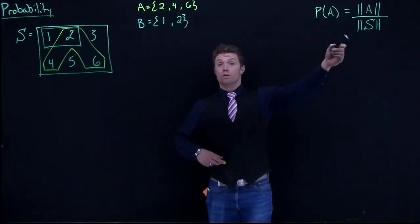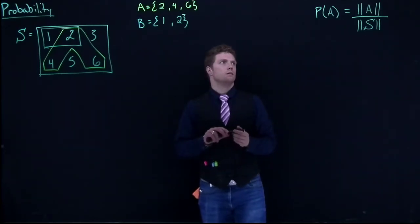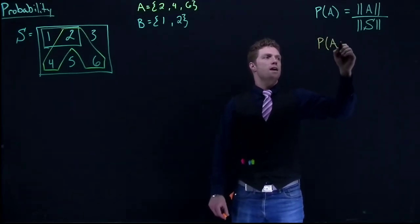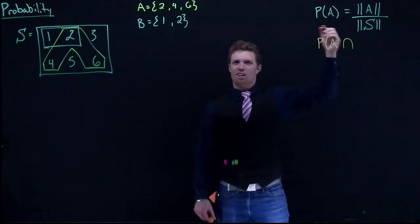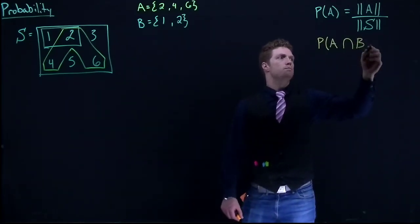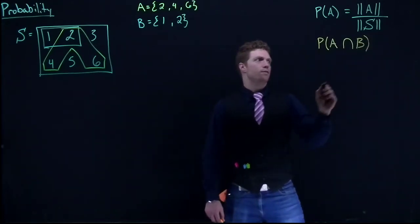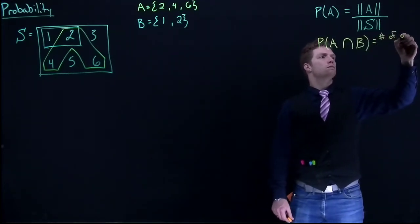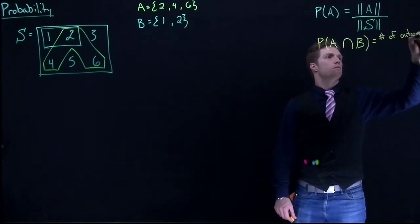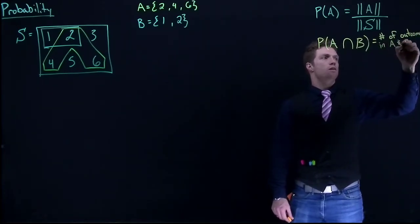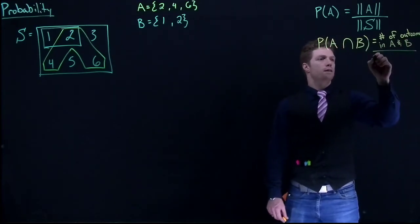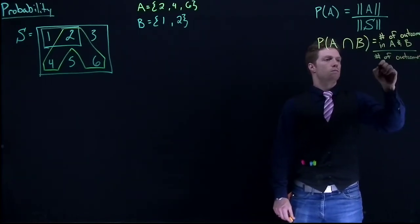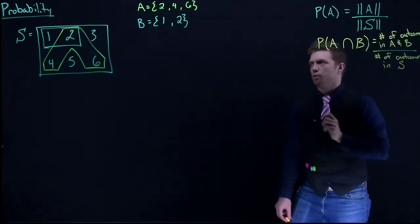The next concept I want to introduce is the probability of A intersect B — that's what that symbol, the little n-shape, means: intersect. The definition is the number of outcomes in both A and B divided by the number of outcomes in our sample space.